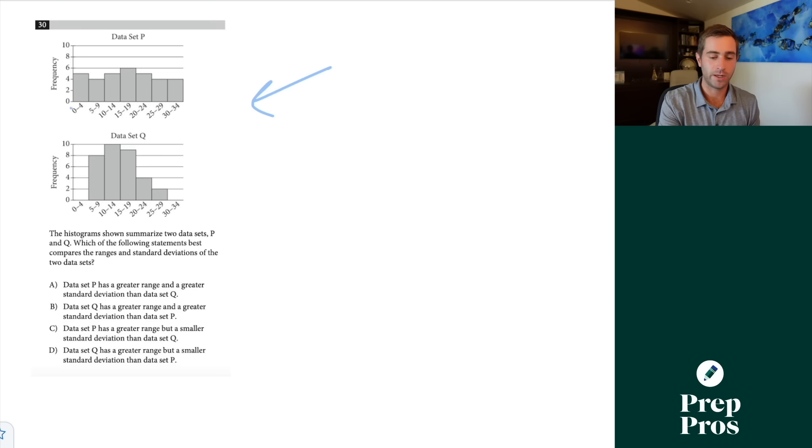Well, what I need to understand is the range is the difference between the smallest and largest, so it's pretty easy to see that Q has a smaller range. Now standard deviation is essentially a way of describing the spread of the data set. The more closely clumped together values are, the lower the standard deviation. The more spread out they are, the higher the standard deviation. So that means data set P is going to have both a greater range and a greater standard deviation than A, and that's how we can find our correct answer there.